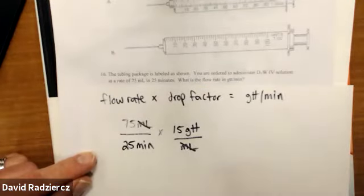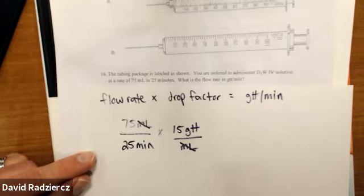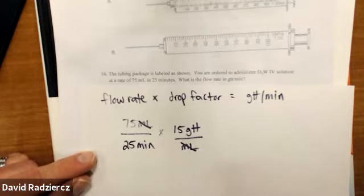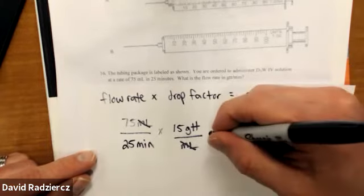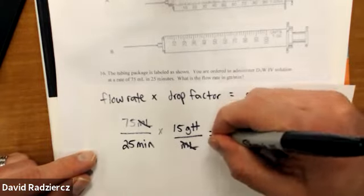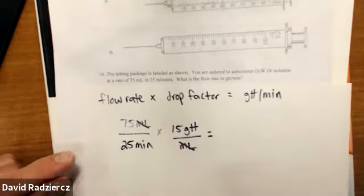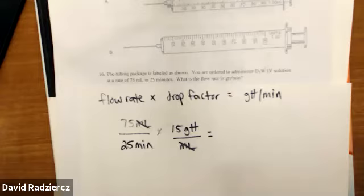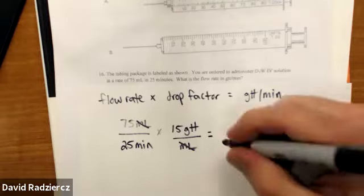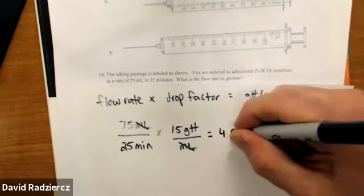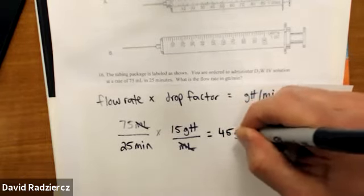If you're trying to do ordered-over-have for flow rate questions, you're going to have a hard time with it — it can be done, but it's difficult. When you do 75 times 15 divided by 25, you get 45 drops per minute.